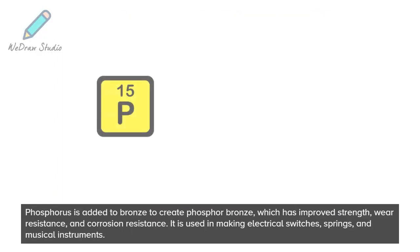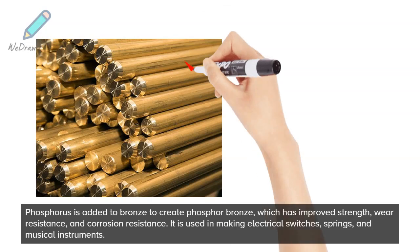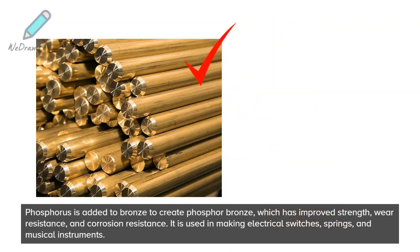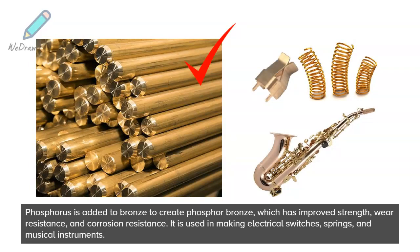Phosphorus is added to bronze to create phosphor bronze, which has improved strength, wear resistance, and corrosion resistance. It is used in making electrical switches, springs, and musical instruments.